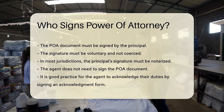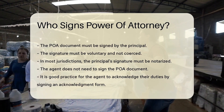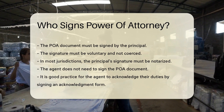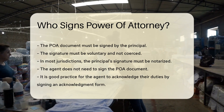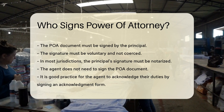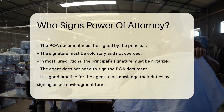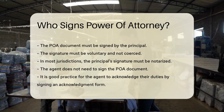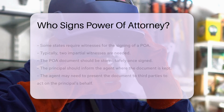The signature must be voluntary and not coerced. In most jurisdictions, the principal's signature must be notarized, meaning a notary public must witness the signing. The agent does not need to sign the POA document; however, it is good practice for the agent to acknowledge their duties by signing an acknowledgement form.